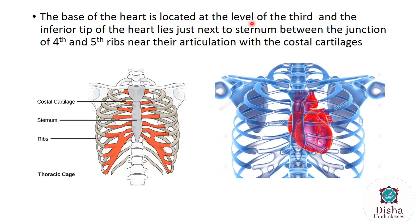The base of the heart is located at the level of the third rib. The inferior tip of the heart lies just next to the sternum, between the junction of the fourth and fifth ribs at their articulation with the costal cartilages. The bottom part of the heart is called the apex, and the upper surface is called the base or superior surface. These costal cartilages are made of cartilage and protect the heart.